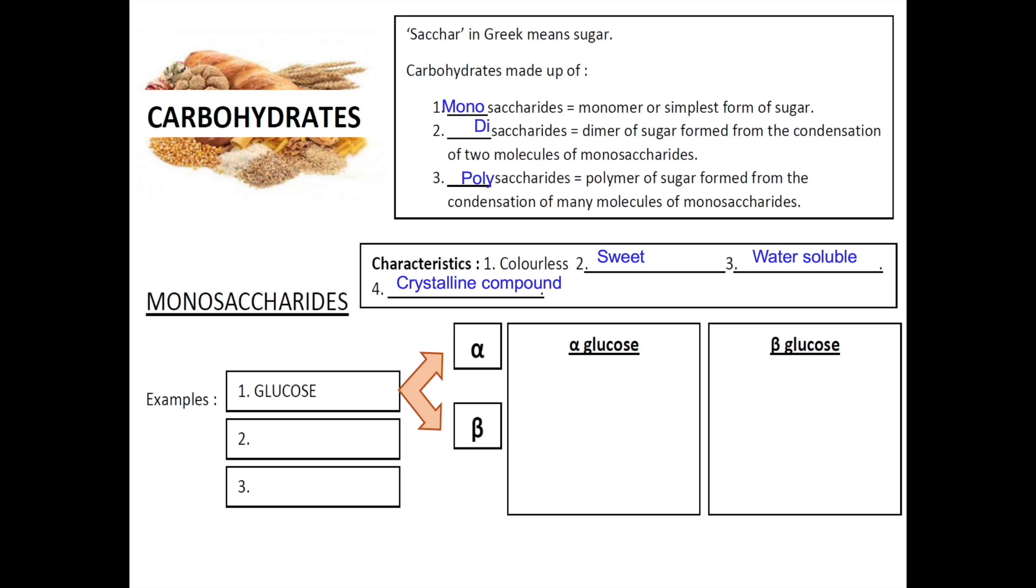Examples of hexoses are glucose, fructose, and galactose. All of them have six carbons, and this is the chemical formula for all of them: C6H12O6. Although they have the same chemical formula, they differ in the structural formula. This is known as isomerism.